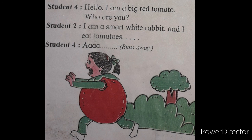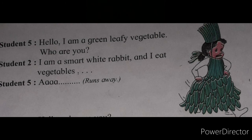You can get the remaining skit on page number 21 of your English textbook. Student Five says: 'Hello, I am a green leafy vegetable — who are you?' Student Two says: 'I am a smart white rabbit and I eat vegetables.' Student Five also gets scared and runs away.